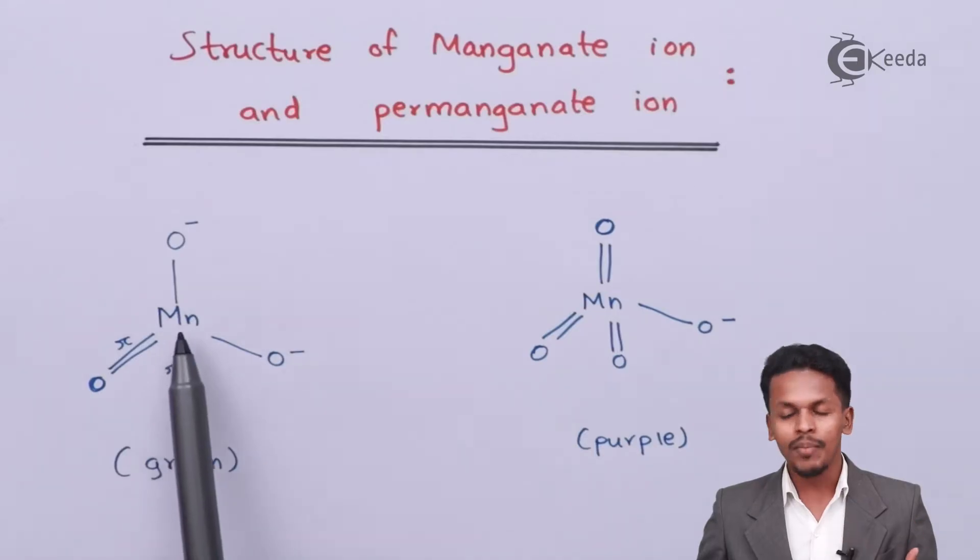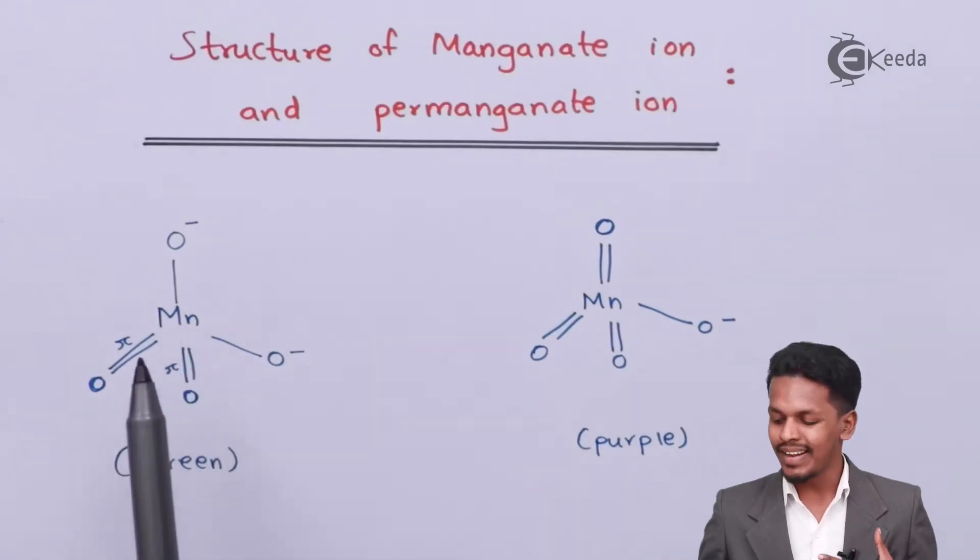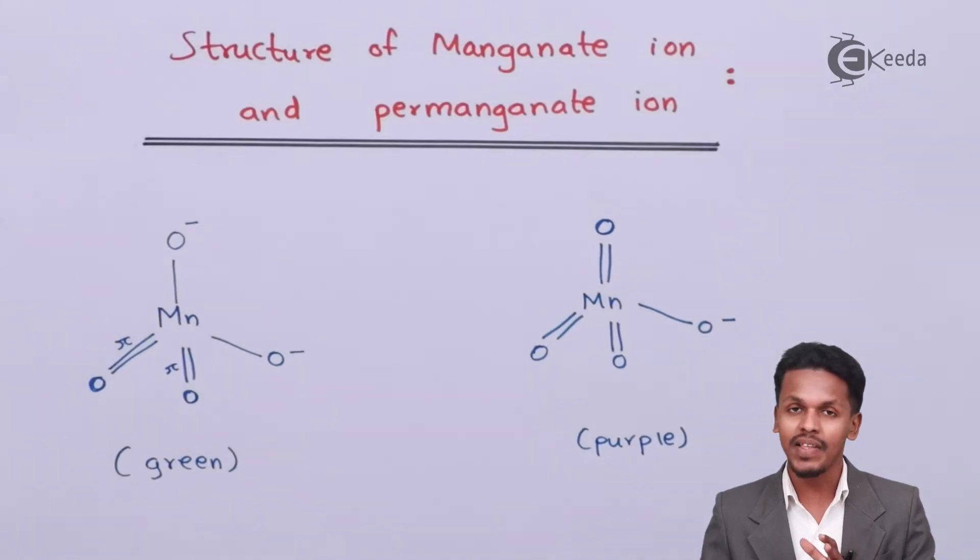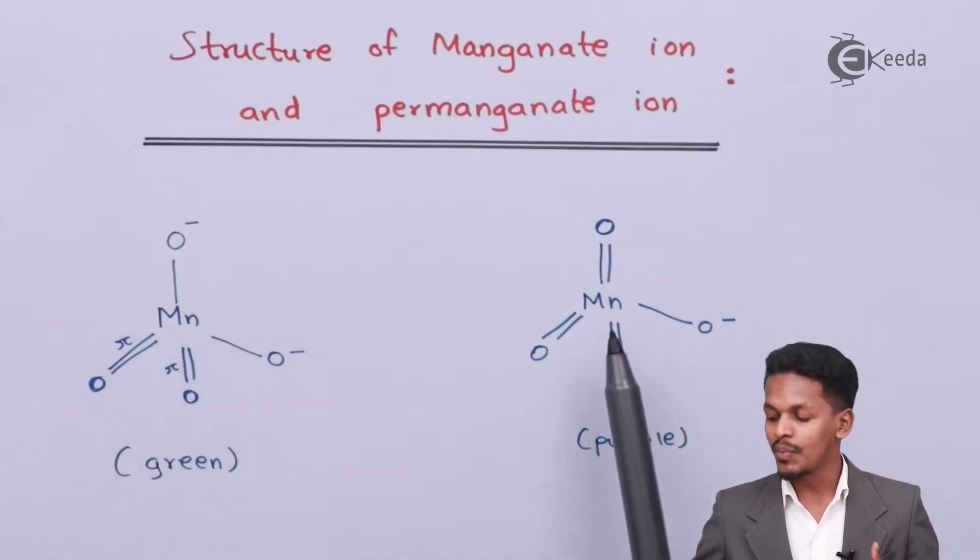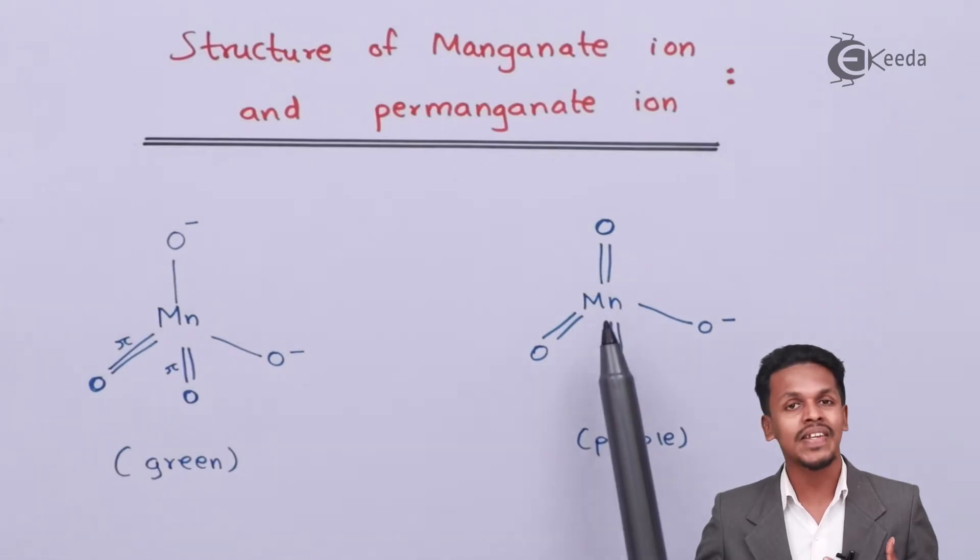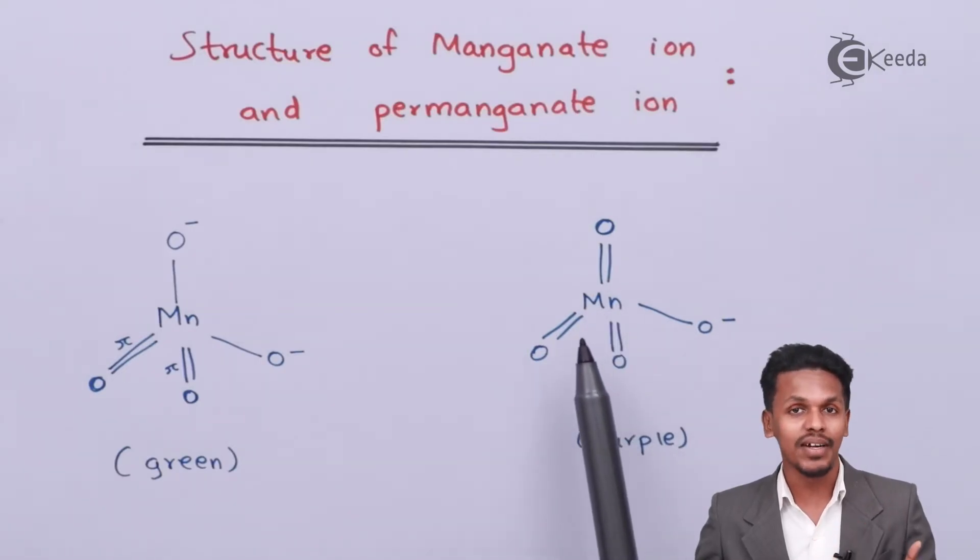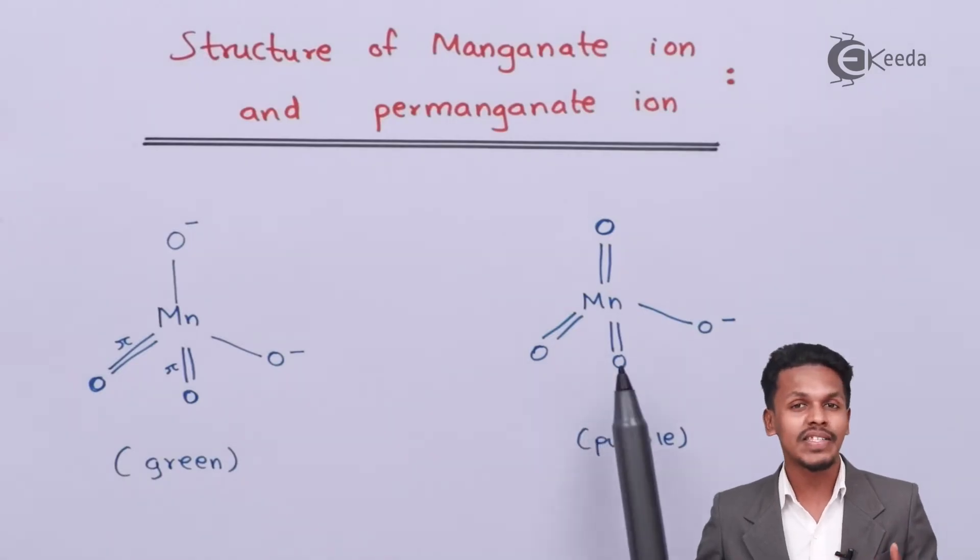If we're talking about this manganate ion, the manganate ion has an oxidation state of +6. That means there is one unpaired electron, making this have a paramagnetic property. While talking about this one, this has an oxidation state of +7 having zero electrons in the d orbital. That's the reason this is diamagnetic.